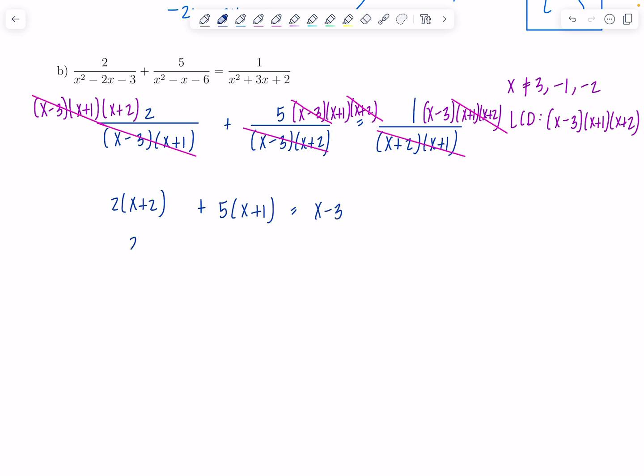Now, distribute and solve for the variable. So, 2x plus 4 plus 5x plus 5 equals x minus 3. This is going to be 7x plus 9 equals x minus 3. So, we have 6x equals negative 12. So, x is negative 2. All right. Good. Should we put it in the solution set?